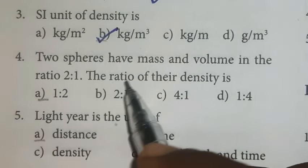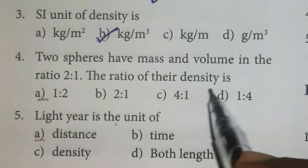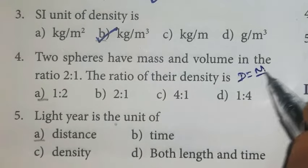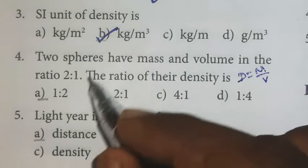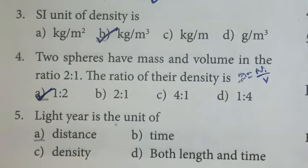Fourth one, two spheres have mass and volume in the ratio 2 is to 1. The ratio of their density is. So, volume and density are inversely proportional. Volume is 2 to 1 and density is 1 to 2. So if 2 to 1 and 1 to 2, Option A is the right answer.